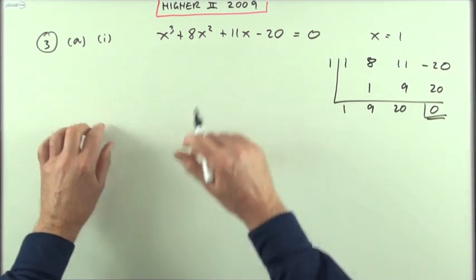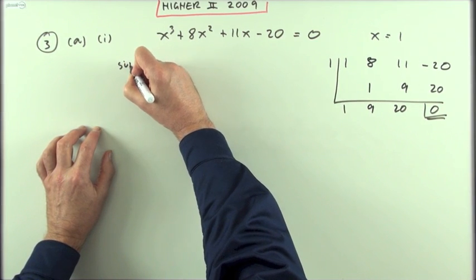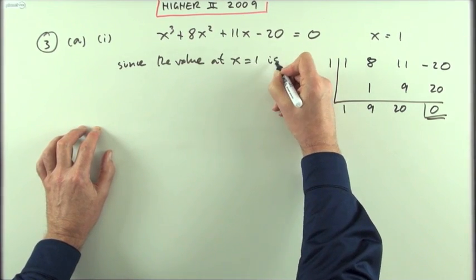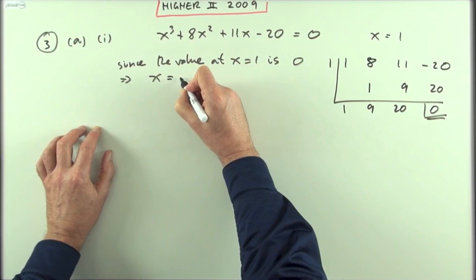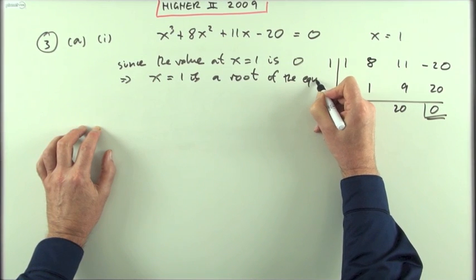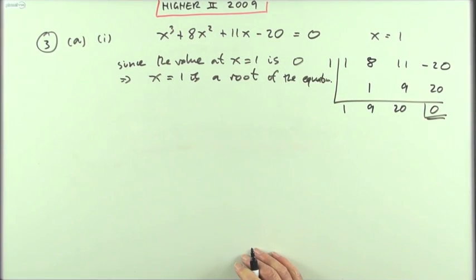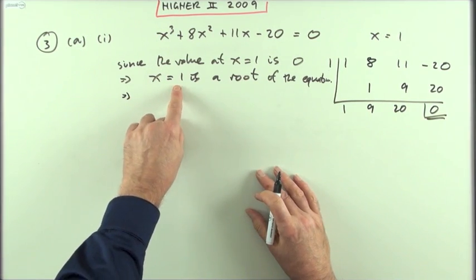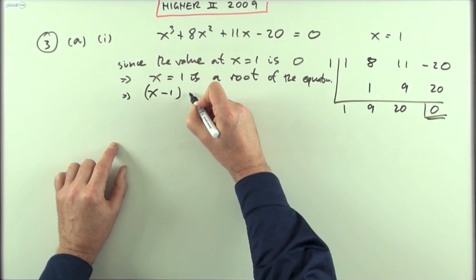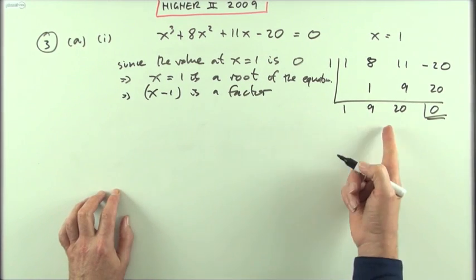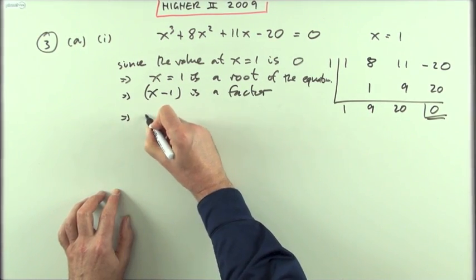You have to be careful how I state my result because it said show that that's a root. So I'd have to write: since the value at x equals 1 is zero, that means x equals 1 is a root of the equation. Then the second part says hence fully factorize it. I'm still going to have to say that I know if that's a root, that means x minus 1 is a factor.